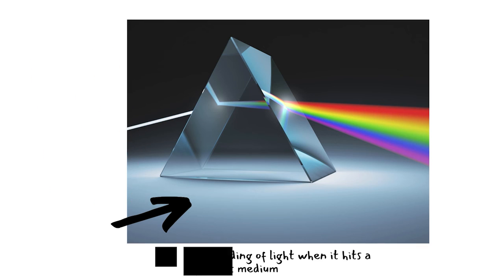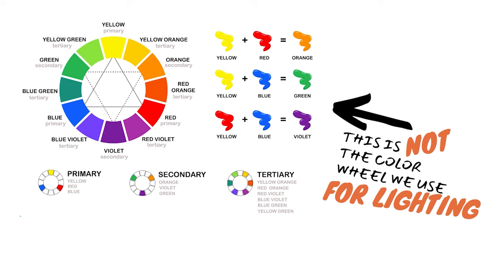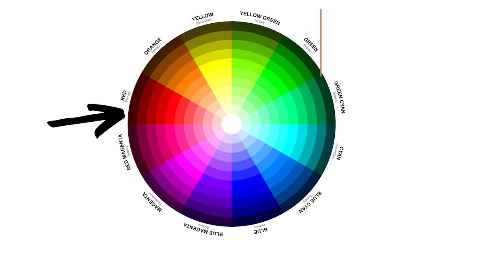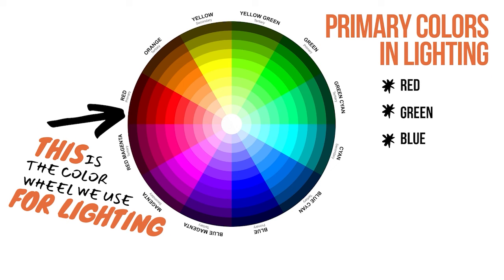Before we look at how light actually causes us to see color, we have to get some basics about the color wheel in our minds. You've probably seen a color wheel like this one in art class before. You probably remember learning that the primary colors are red, yellow, and blue, and that if you mix yellow and blue, you get green, and so on. That's all true — but only in paint. When we talk about light, this is not the color wheel we use. This is the color wheel for lighting. It's similar, but not the same. The big difference is in the primary colors, which in lighting are red, blue, and green.